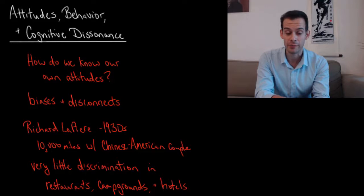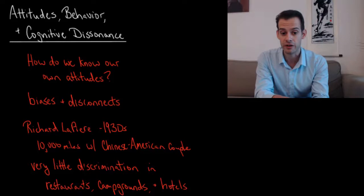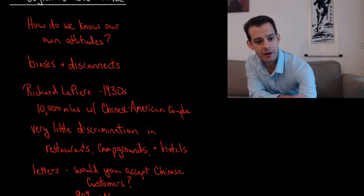This disconnect was demonstrated in the 1930s by Richard LaPierre. What LaPierre did was he traveled over 10,000 miles in total across the United States along with a Chinese-American couple, and this was during a time period in which anti-Asian sentiment was fairly high. What LaPierre and his companions found was that they faced very little discrimination in the restaurants, campgrounds, and hotels that they visited.